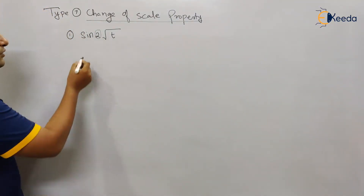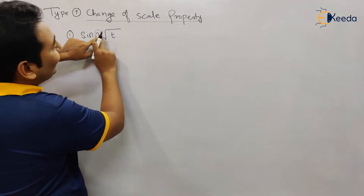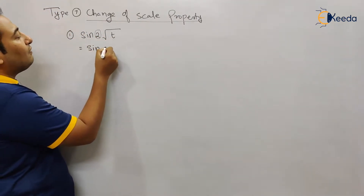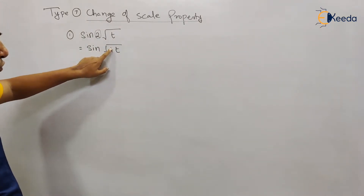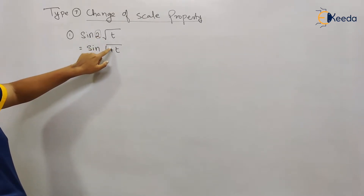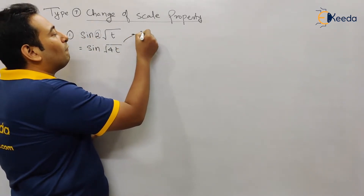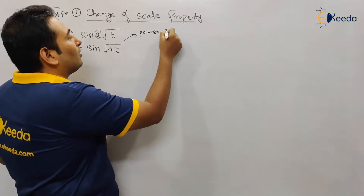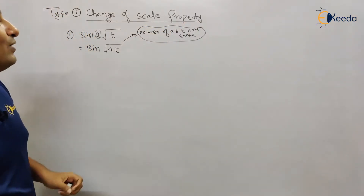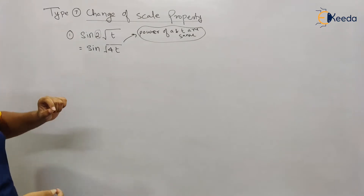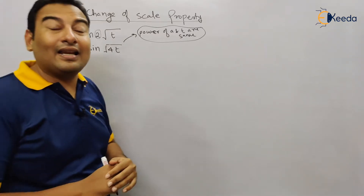Since the powers are not identical, we must rewrite this. Take the 2 inside the square root, so it becomes sin√(4t). If you take the 4 out of the square root, that gives back 2, since √4 = 2. These are equivalent expressions. Now the power of 'a' and 't' are the same, so the actual scaling factor is 4 — not 2 as it initially appeared.